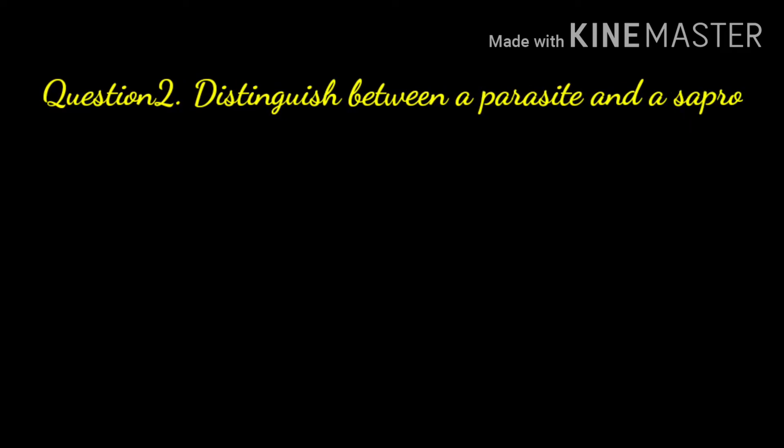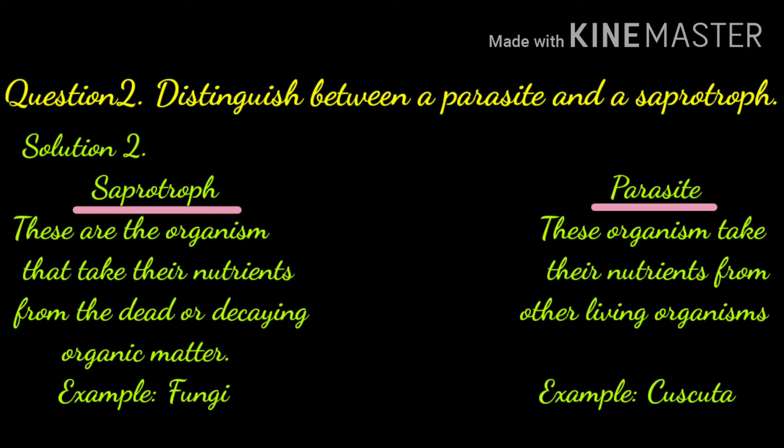Our next question is: distinguish between a parasite and a saprotroph. Saprotrophs are organisms that take their nutrients from dead or decaying organic matter — example is fungi. Parasites are organisms that take their nutrients from other living organisms — example is Cuscuta.